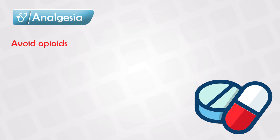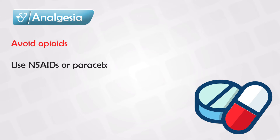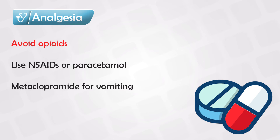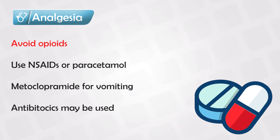If you want to give the patient analgesia, avoid giving opioids as they might exacerbate the pain. Instead, give diclofenac or other NSAIDs. IV paracetamol can also be given, and if they have vomiting you can give metoclopramide. Antibiotics can also be given if you suspect an infection. For most cases, by simply giving analgesia and letting the patient rest with plenty of fluids,